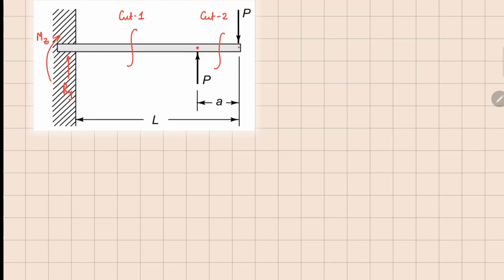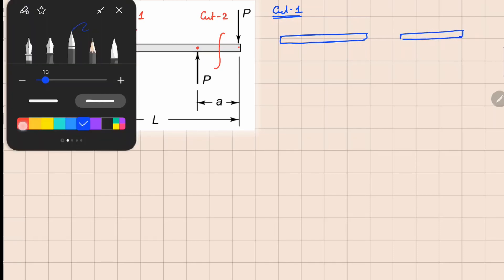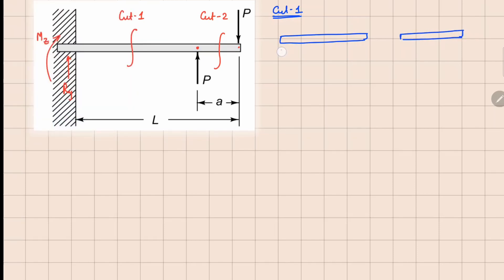We can draw the free body diagram for cut one. For cut one we have the left part and the right part. On the left part we are going to have the reactions R_y and M_z, and since we have a positive phase opened up here we are going to have V1 and M_b1.